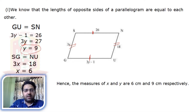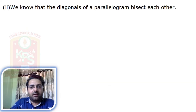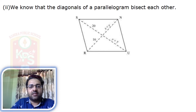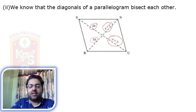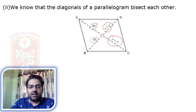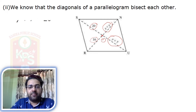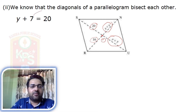In similar way, in the next part we will also use the property of a parallelogram. Here we have diagonals given. X plus Y is one half part of a diagonal, and 16 is the other half of that same diagonal. Similarly, 20 is half of diagonal SU, and Y plus 7 is another half. Diagonals of a parallelogram bisect each other — bisect means they divide equally. Suppose O is the point of intersection.